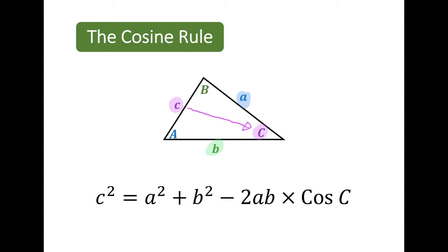We can also rearrange the cosine rule formula to be able to find one of the missing angles. Let's have a look at how we rearrange that formula.